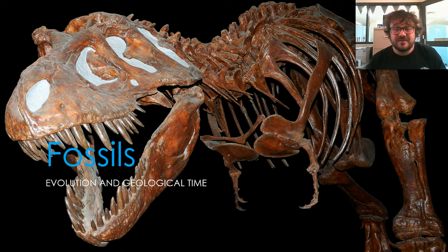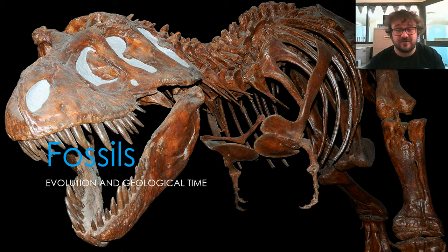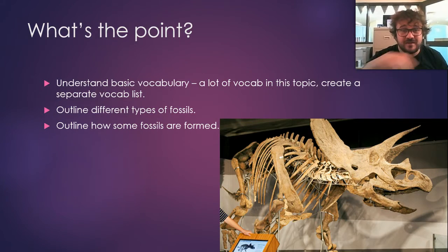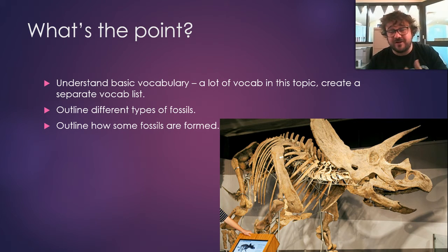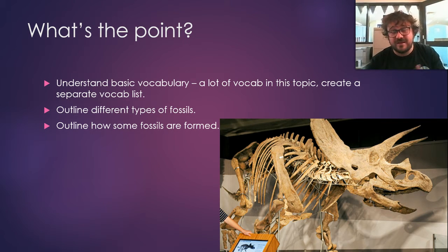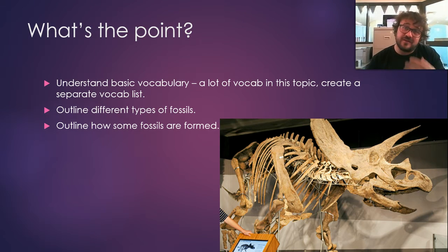Let's start with the thing that we all grew up loving, and if you're lucky, you never grew out of loving fossils, because that's how we know about dinosaurs. Today, you want to be able to understand some basic vocabulary — in this unit there is a lot of vocabulary, so please set up a separate vocab list. You also want to be able to outline different types of fossils and describe how some of them are formed.